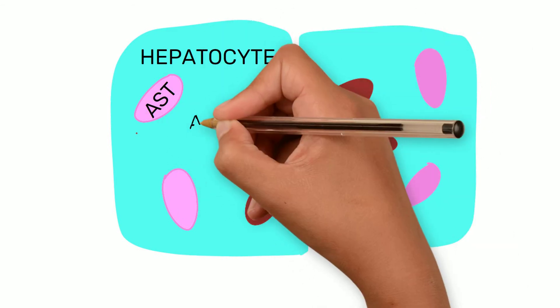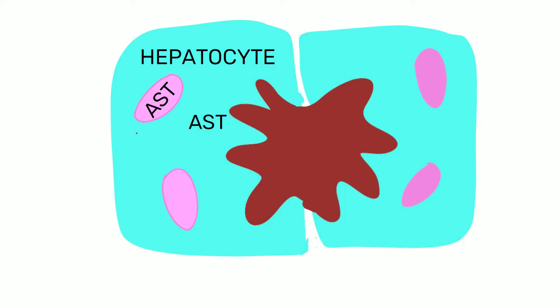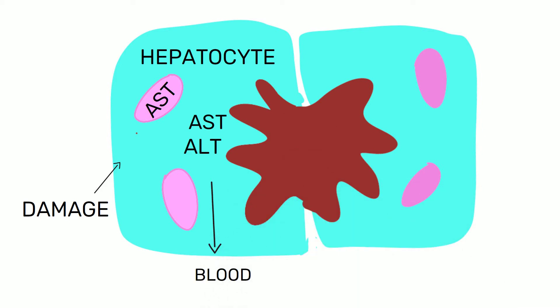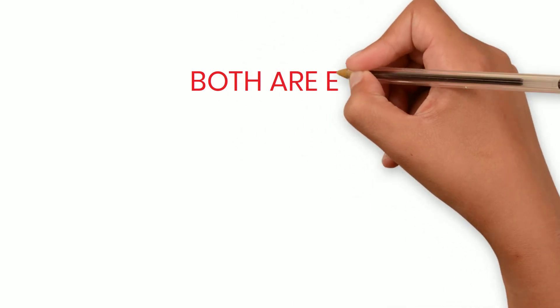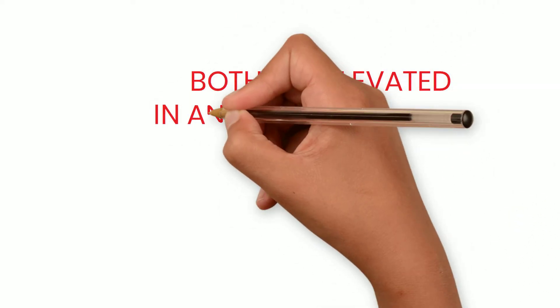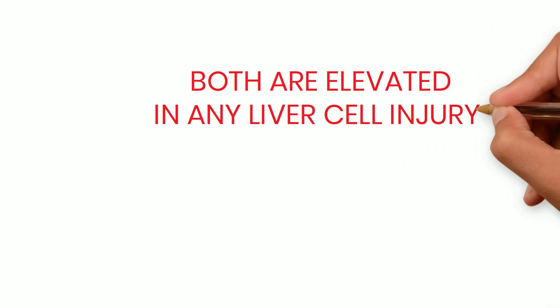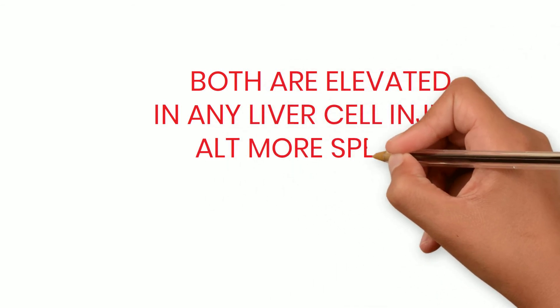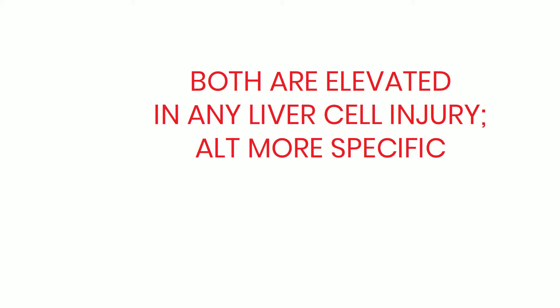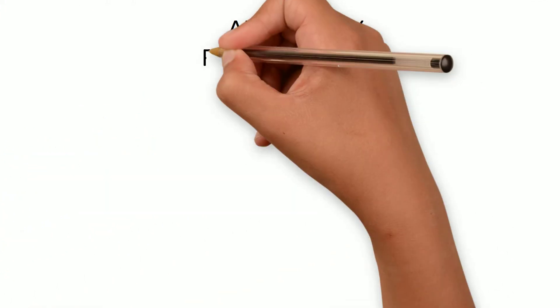AST is present in both the mitochondria and cytosol of the hepatocyte, whereas ALT is present only in the cytosol. Whenever there is hepatocellular damage, these enzymes are released into the blood, elevating blood levels. Both AST and ALT are elevated in any liver cell injury, but ALT is relatively more specific because ALT is mainly found in the liver with very small amounts in other tissues.